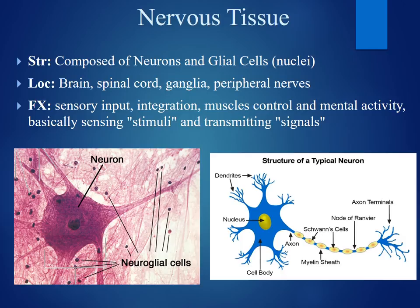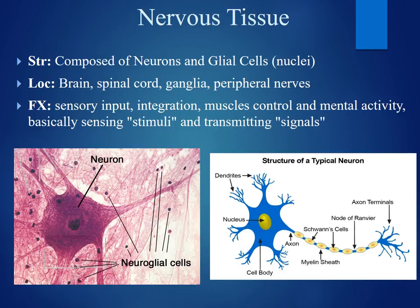Our last tissue for this AV lecture is nervous tissue, and this is a pretty straightforward tissue. The structure is composed of neurons and glial cells. The location is in the brain, spinal cord, ganglia, and peripheral nerves. The function is for sensory input, sensory integration, muscle control, and mental activity. Basically, any time we receive stimuli and transmit a signal from the brain to a different part of the body, nervous tissue is involved. This tissue stains a dark purple on the slides. The neuron is indicated on the left image, and those smaller darker spots outside the neuron are the glial cells.